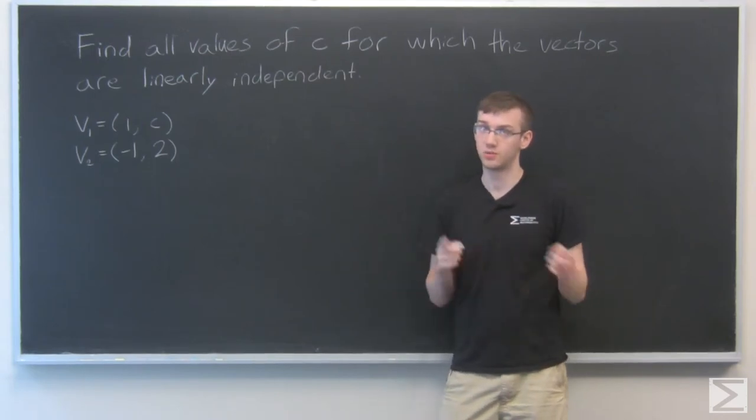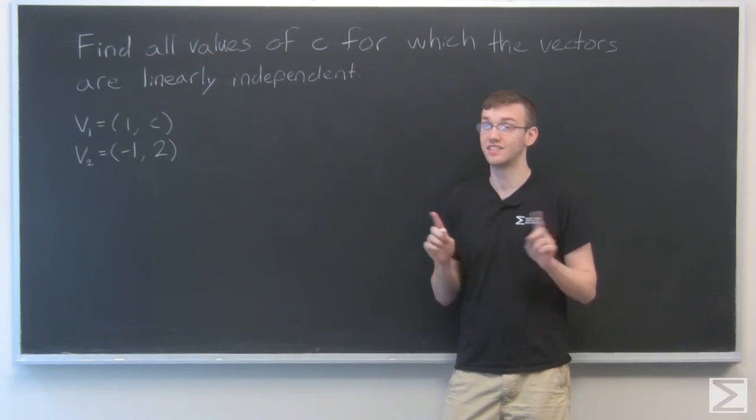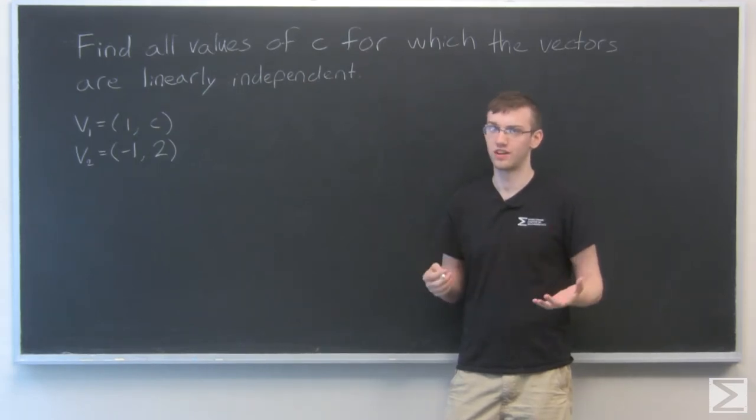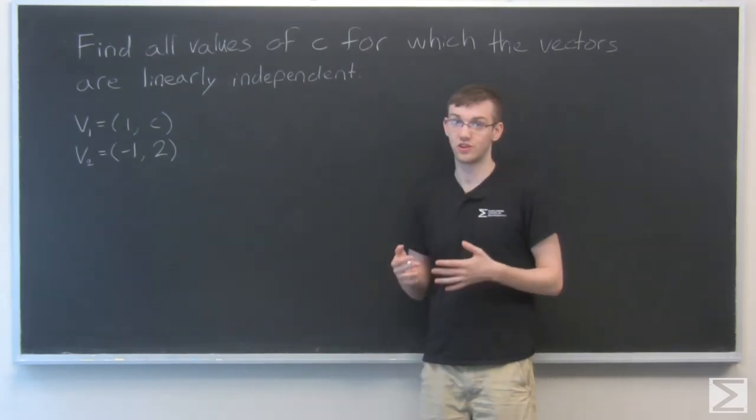Now, if the determinant is equal to 0, that means that they are linearly dependent. So we need to find the values of C for which the determinant is not 0.